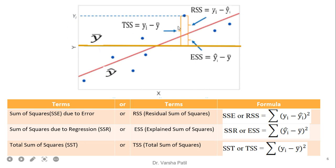If we compare with Y-dash, that is Y-dash and the actual value, Y-dash and the predicted value, and predicted value and the average value — based on those three, three terms are defined. In some literature, they are using SSE, SSR, and SST. And in some other literature, they are using RSS, ESS, and TSS. We have to remember both the ways.